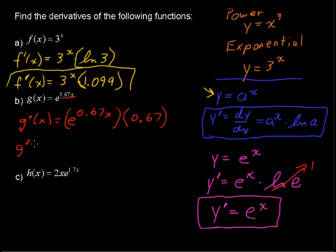And certainly we could rewrite this just with the 0.67 in the front. It's fine the way it is. But typically we write 0.67, the constant, and then times e to the 0.67x.